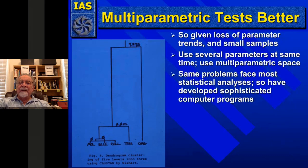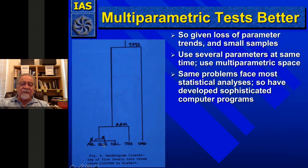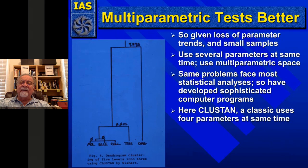The other thing to do is not use just one of the 20 parameters alone for the determination, but to do multi-parametric tests. We did that to a limited degree and that's when we got just three levels — and this is what is discussed in that interview with Miller. This is a test using Clustan, a classic program that uses four parameters at the same time in multidimensional space.